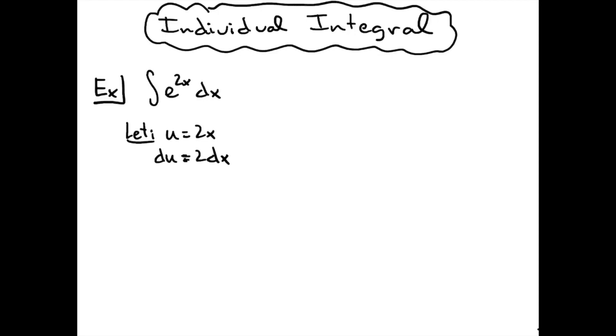And then we want to go ahead and solve all the way down for dx. So we're going to divide both sides by 2. So we'll have du over 2 is equal to dx.